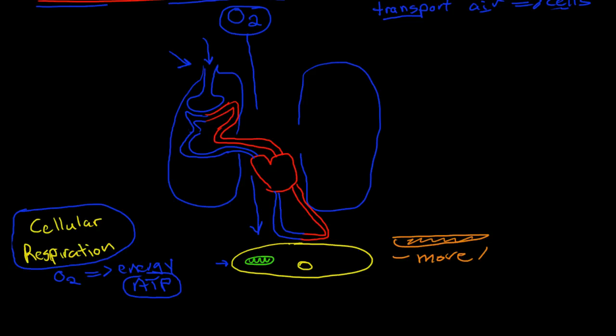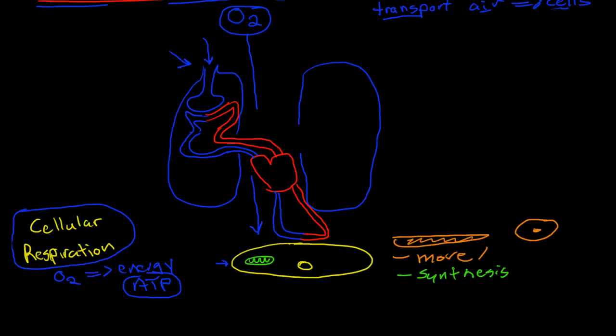Well, some cells like muscle cells need to contract and move, and some cells need to move too, not just muscle cells. Like white blood cells move around the bloodstream through the process of diapedesis, and that requires energy as well. Cells need energy to synthesize molecules and to secrete molecules.